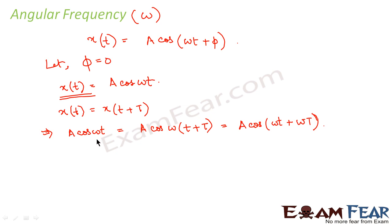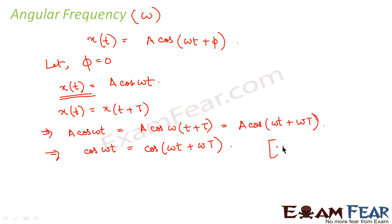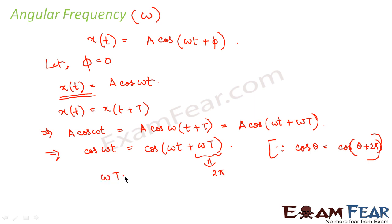Now we also know that cos θ repeats itself after 2π. From this expression we get cos(ωt) is equal to cos(ωt + ωT). Since cosine repeats after 2π, we can conclude that ωT must equal 2π, and from here we can say that omega is equal to 2π by T.